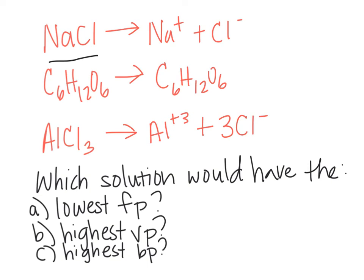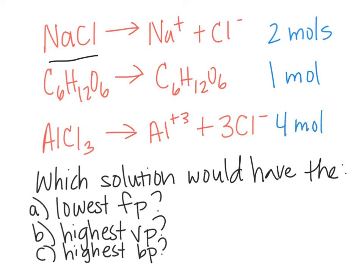Now we add up the number of moles produced on the product side by adding up the coefficients. NaCl gives a coefficient of 1 and 1, which gives us 2 particles or 2 moles of solute in solution. The sugar has a coefficient of 1 — all covalent compounds will always be 1 mole or 1 particle. And aluminum chloride has 4 moles total.